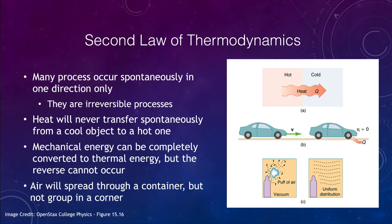The second law of thermodynamics says that heat will not transfer spontaneously from a cool object to a hot one. In order to transfer heat from a cool object to a hot one, you need to do work. Many processes occur spontaneously in only one direction — they are irreversible. Mechanical energy can be completely converted to thermal energy, but you cannot do the reverse; you cannot convert thermal energy completely into mechanical energy, and no process can be 100% efficient.